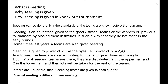Seeding is given to powers of two — that is 2, 4, 8, 16, and so on. In a fixture, teams are set according to lots and given byes accordingly. But if two or four seeding teams are there, they are distributed — two in the upper half and two in the lower half — and then lots are taken for the rest of the teams. If there are four quarters, four seeding teams are given to each quarter. Special seeding is different from regular seeding.